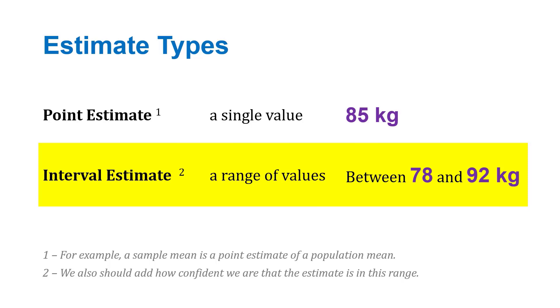We talked about two estimate types. One is a point estimate, a single value like 85 kilograms. And then we have an interval estimate, like a confidence interval, where we have a range of values. Between 78 and 92 kilograms might be an example.